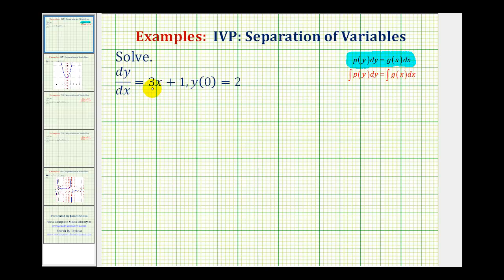So for dy dx equals three x plus one, we can just multiply both sides of the equation by dx or write this in differential form. So we'd have dy equals the quantity three x plus one times dx.